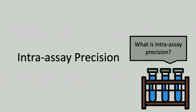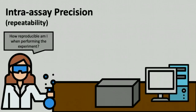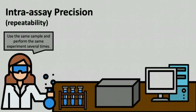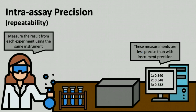Next, we'll define intraassay precision. Intra means within, so this precision answers the question: how reproducible is the measurement within the assay, or how reproducible is the scientist when performing the experiment? For intraassay precision, the same scientist performs the same procedure multiple times on the same day. Each time, the scientist uses an aliquot of the same starting sample and makes the measurement using the same instrument, so the end result is expected to be quite similar. Since this method assesses the precision of a repeated experiment, intraassay precision is sometimes called repeatability.